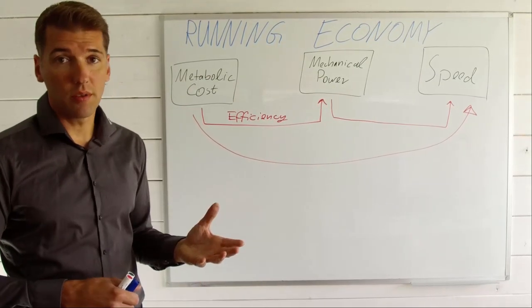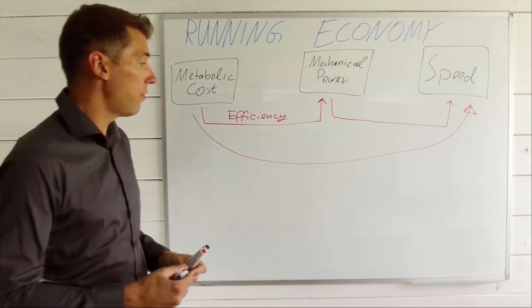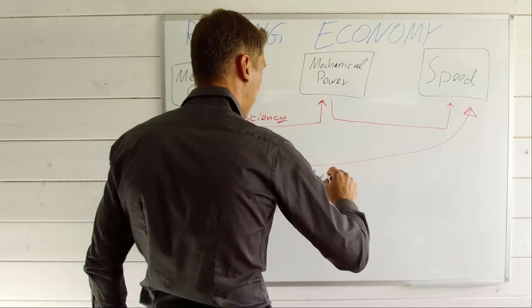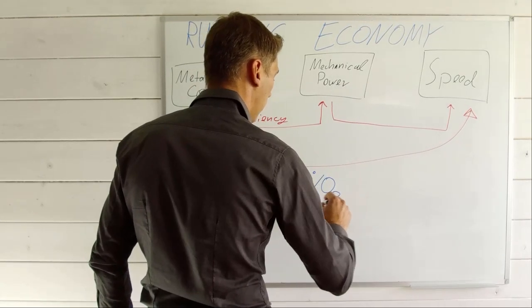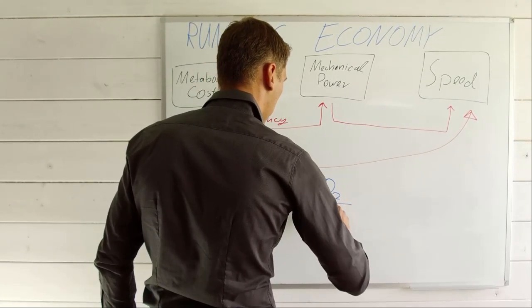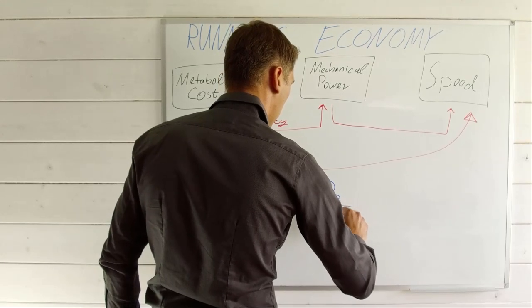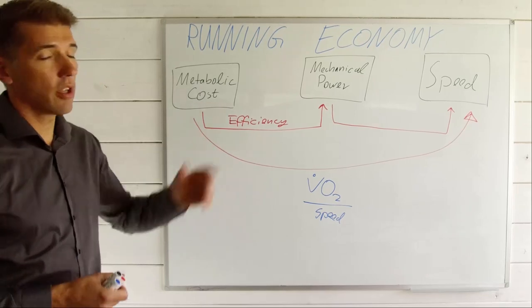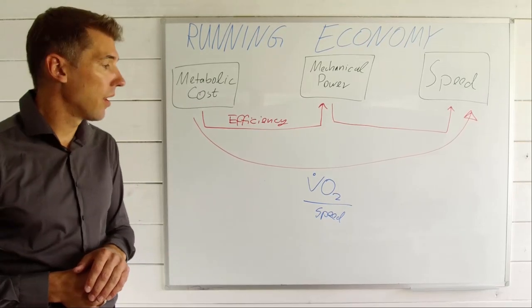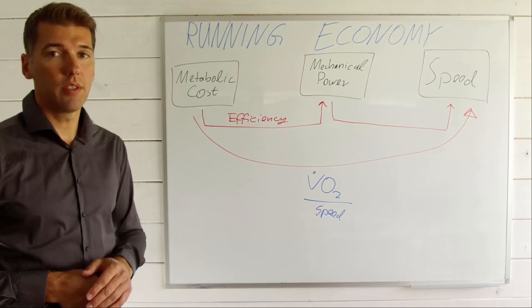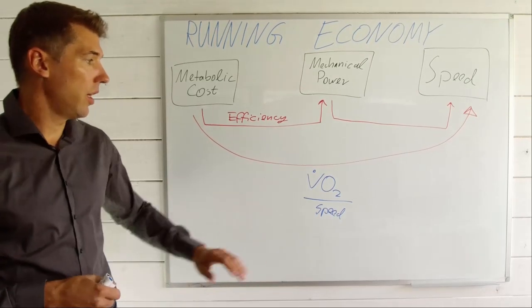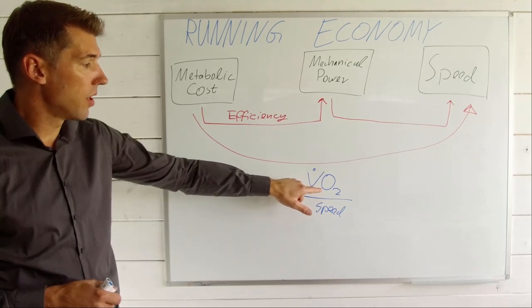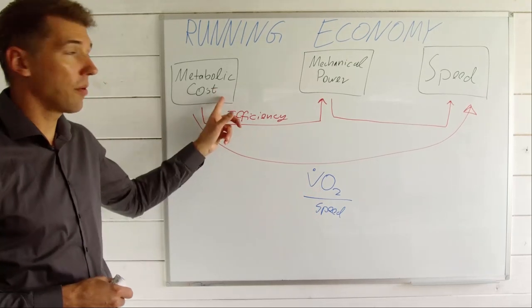So how is it measured? Well, in most cases, what you will find is looking at oxygen uptake, VO2, over speed. This is the most common way to express running economy. Now, it has some very important shortcomings. And the shortcomings is basically coming from VO2 is not metabolic cost.